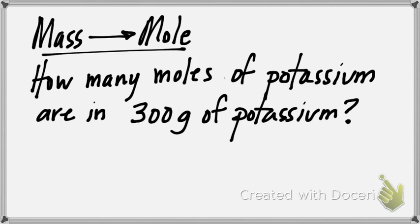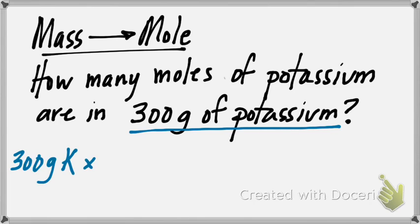In the next type of problem, I'm going to deal with mass to mole. The question is, how many moles of potassium are in 300 grams of potassium? Notice that there's no atoms there, which means you don't use Avogadro's number. Instead, we're dealing with mass. When we're dealing with mass in particular elements, that's when we're going to be using the periodic table. Again, we start with what we know, 300 grams of potassium.